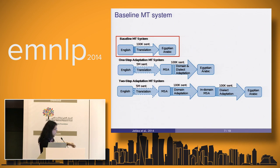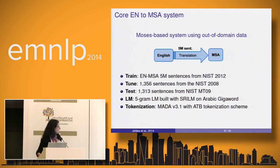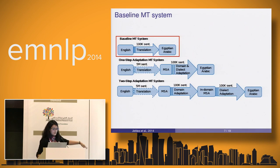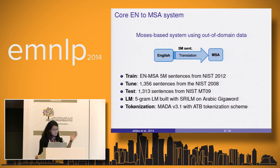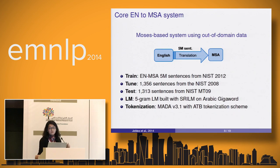For the second approach, we separate domain adaptation and dialect adaptation to examine the individual contributions. To build the English-to-MSA system, we built a classic Moses-based system using five million sentences from the NIST data as out-of-domain data. We tuned and tested it, built a language model using SRLM on the Arabic Gigaword, and used MADA for tokenization with the ATB tokenization scheme.